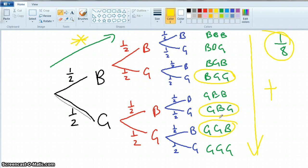What's the probability of getting at least two girls? Four-eighths, which is a half. What's the probability of getting at least one girl? Seven-eighths.